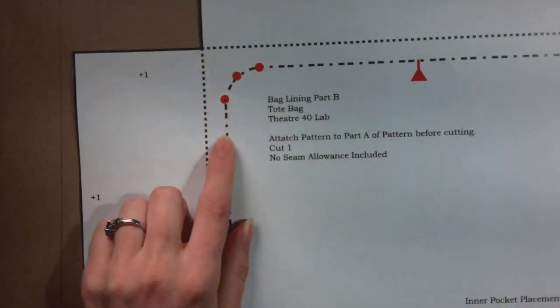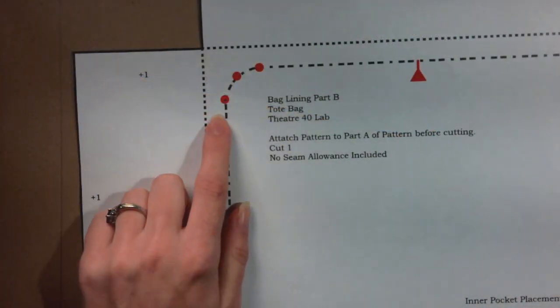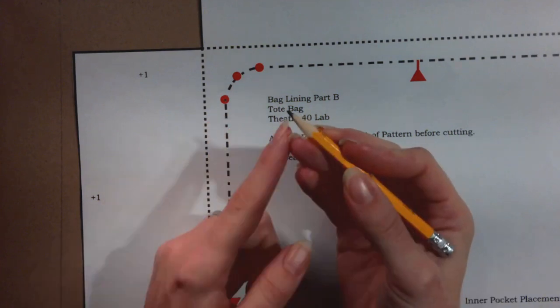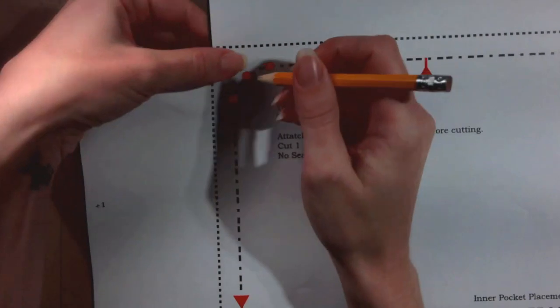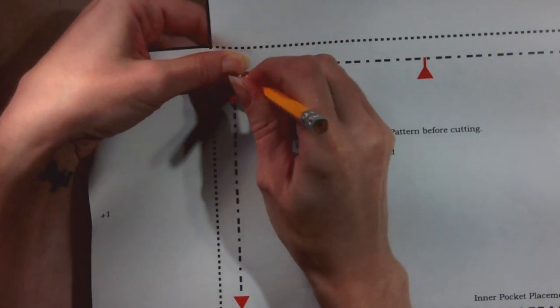The internal markings for the placement of the inner pocket are designated by red dots and red triangles pointed towards the corners. Use the tip of the pencil to gently poke a hole in the center of each dot or corner.